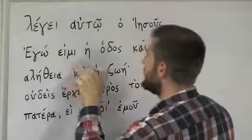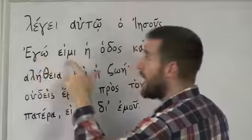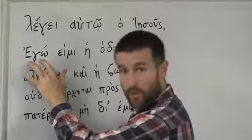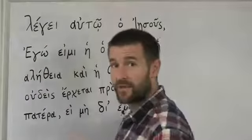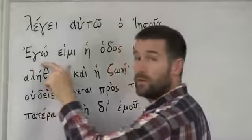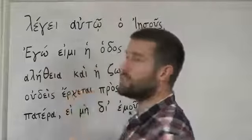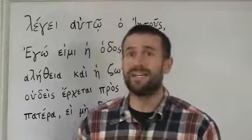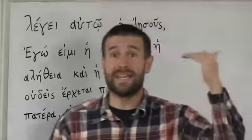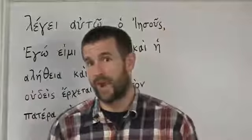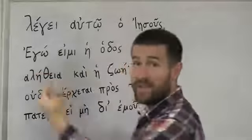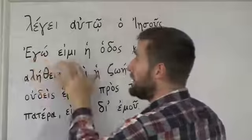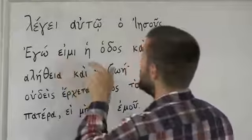Egō eimi hē hodos means 'I am the way.' The word egō gets the accent on the second syllable — see that accent is over the omega. A way to remember egō: it's like our English word 'ego,' which is where our English word comes from. A person with a big ego puts all the emphasis on themselves — and egō means 'I.' So egō eimi hē hodos — 'I am the way.'